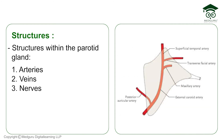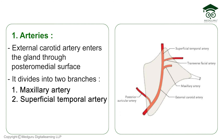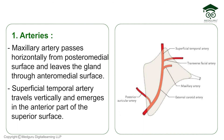Within the parotid gland, the external carotid artery enters through the posteromedial surface and divides into two branches: the maxillary artery, which travels horizontally and exits through the anteromedial surface, and the superficial temporal artery, which travels vertically and emerges from the anterior part of the superior surface.